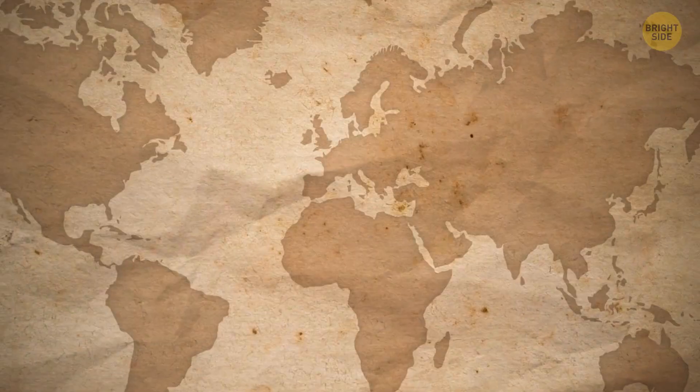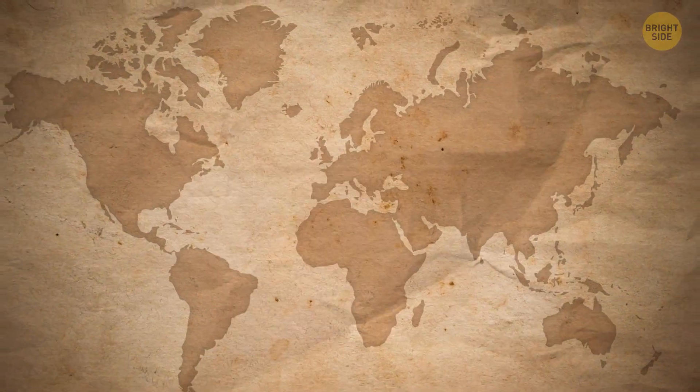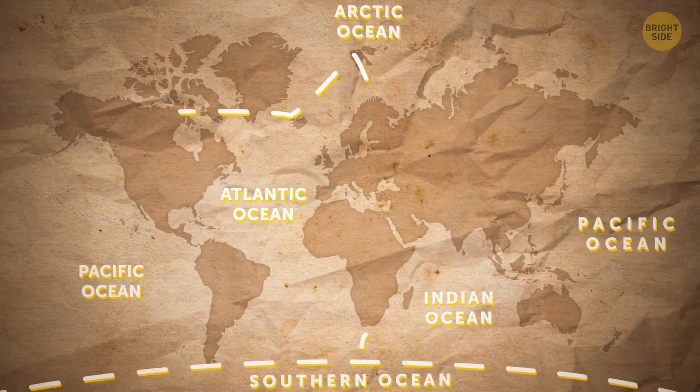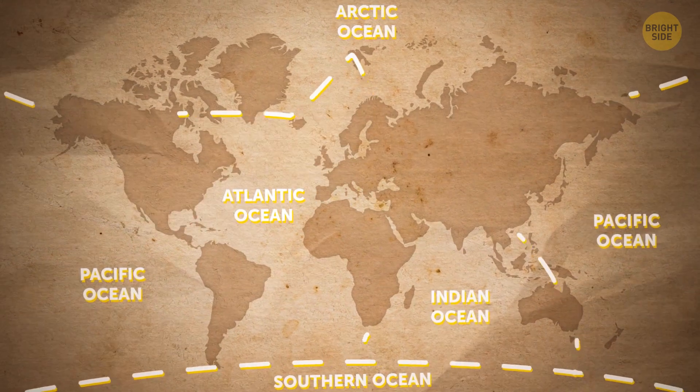When you look at the seas and oceans on a map, you might think that they just flow into each other — like there's really only one big ocean and people just arbitrarily gave different names to its different parts. Well, you'll be amazed at how much more substantial the borders between them actually are.